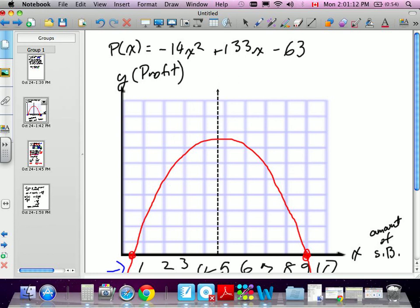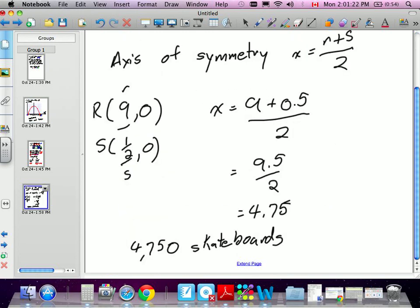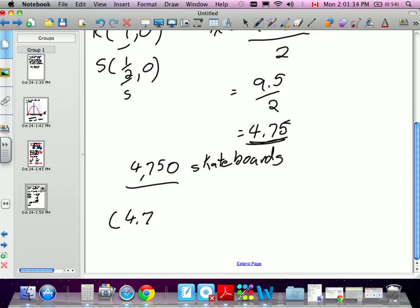But we need to know how much they're going to make also. So at 4,750 skateboards is when they make the most money. I'm going to take this here because that's going to be the x-value of our vertex. So 4.75 is the x-value. I need to find the y-value, which is the amount they make. So I'm going to plug that back into either the factored form or the standard form. In this case, it doesn't matter, you still get the same answer. I'm going to do the standard form this time.